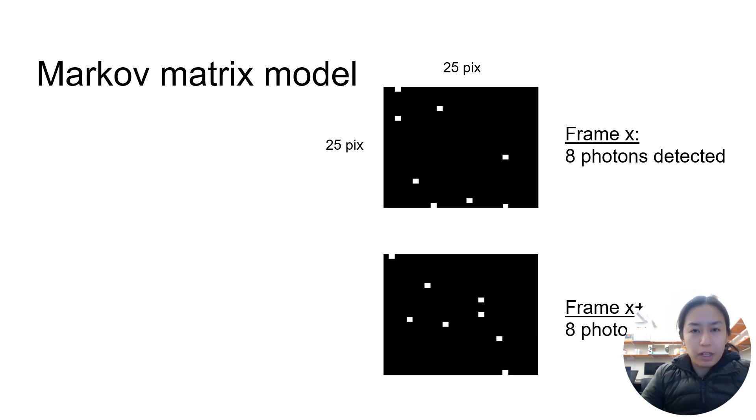To address this, our lab has developed a Markov matrix model. Here we see two cropped frames adjacent in time. The majority of SPADs here have no detection events, but a total of eight photons were detected in each frame. None of the pixels detected photons in both frames, with the exception of this one at the bottom here.